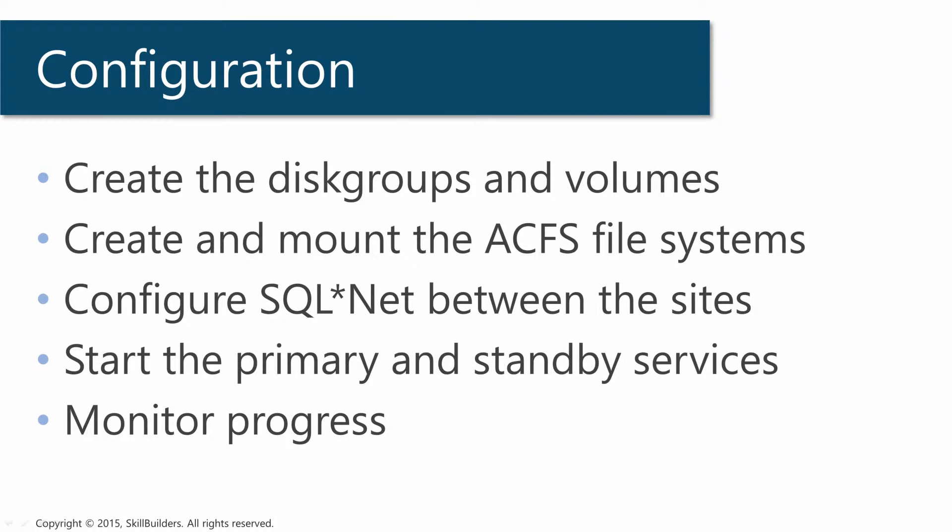These are the steps we need to go through. First, create the disk groups and the volumes. Then we have to set up the ACFS file systems and configure SQLNet between the two sites, because SQLNet is the means by which the changes are propagated. At the primary site, we have to start the service which will capture changes and transmit them. And then at the standby site, start the service which will receive the changes and apply them to its copy of the file system. Then as we monitor progress, we should see the changes being propagated in near real time.